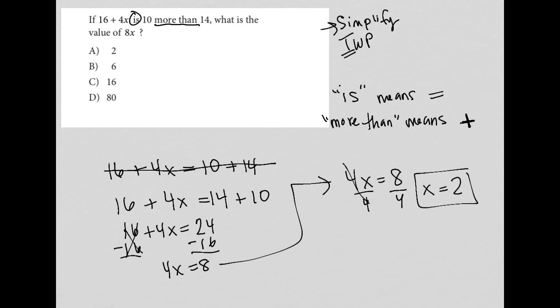Now, here's the tricky part. Choice A says 2, and a lot of students will choose that answer because they did all this math and they simplified fully and they got x equals 2. But another portion or another part of this question is something that I call read the question carefully.